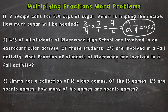That example would be a repeated addition type of multiplication problem — we needed three-fourths and we were tripling it. So three-fourths plus three-fourths plus three-fourths, which is just three-fourths times three.